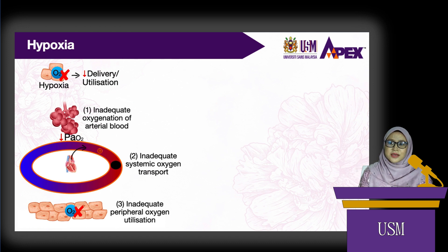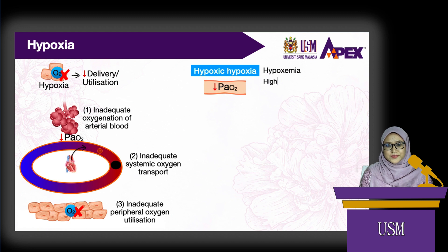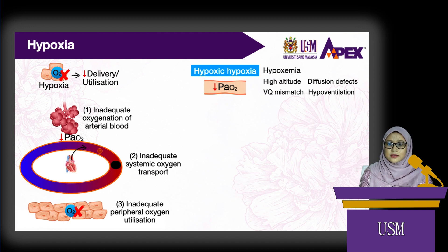Hypoxia can be divided into four categories based on underlying mechanisms. First, hypoxic hypoxia, which is hypoxemia — a reduction in arterial pressure of oxygen. As mentioned earlier, it can be caused by high altitude, diffusion defects, V/Q mismatch, or hypoventilation.